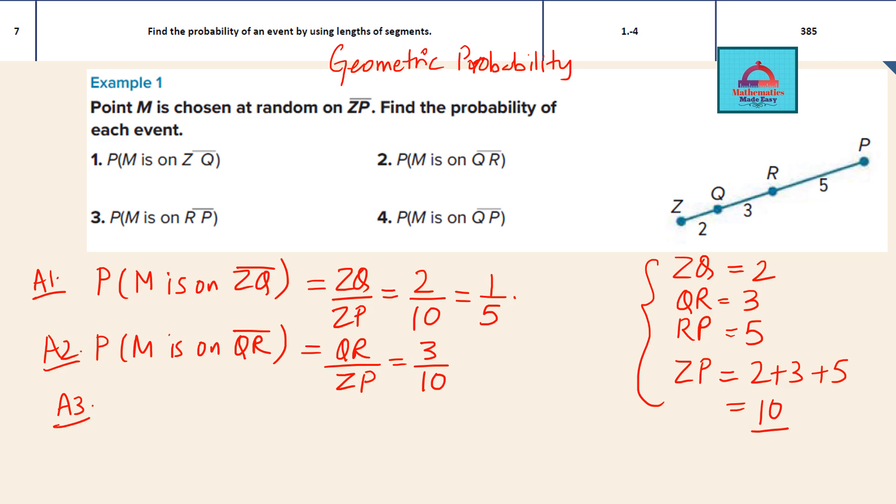Similarly, answer of question 3: probability M is on RP. We are going to divide the length RP with the total length ZP. So RP is 5, ZP is 10, so this is 1 by 2.